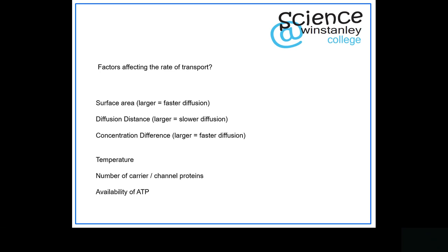One quite important factor to think about is the number of channel proteins. The more channels or carriers you've got, the faster you can get facilitated diffusion. This can only apply to some types of transport — not all types use carrier proteins.